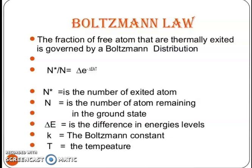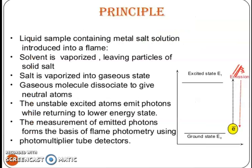Boltzmann's law: the fraction of free atoms that are thermally excited is governed by a Boltzmann distribution. N* divided by N equals exponential of (−ΔE / kT), where N* is the number of excited atoms, N is the number of atoms remaining in the ground state, ΔE is the difference in energy levels, k is the Boltzmann constant, and T is the temperature.